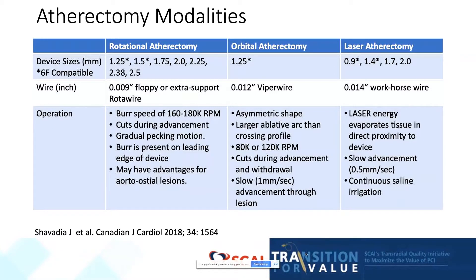Currently in the United States, there are three atherectomy modalities on the market: rotational atherectomy, orbital atherectomy, and laser atherectomy. With all three, it is possible to use six-French-compatible systems for most cases. The rotational atherectomy and orbital atherectomy systems require the use of proprietary wires in order to perform the atherectomy procedure.